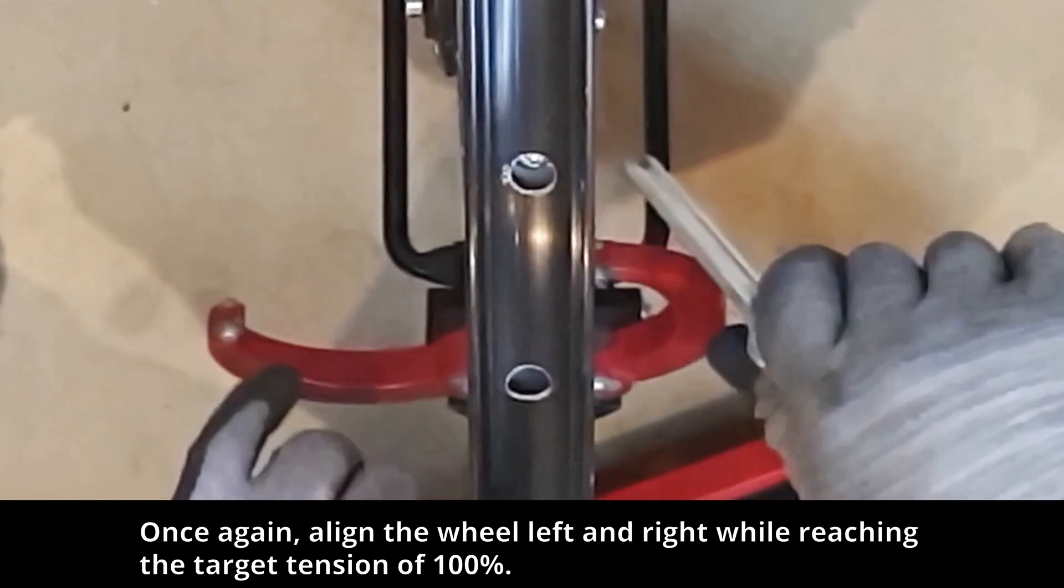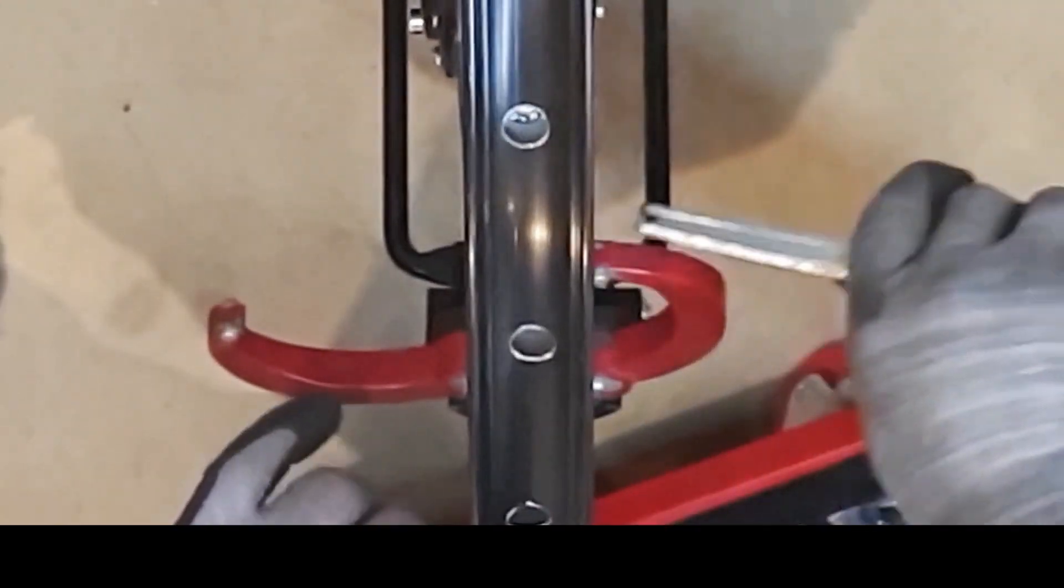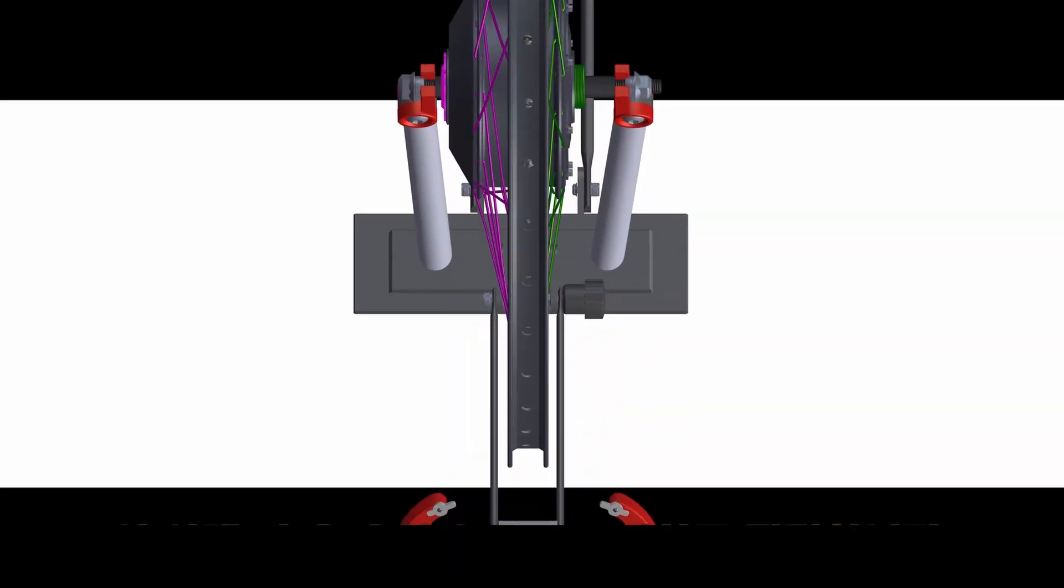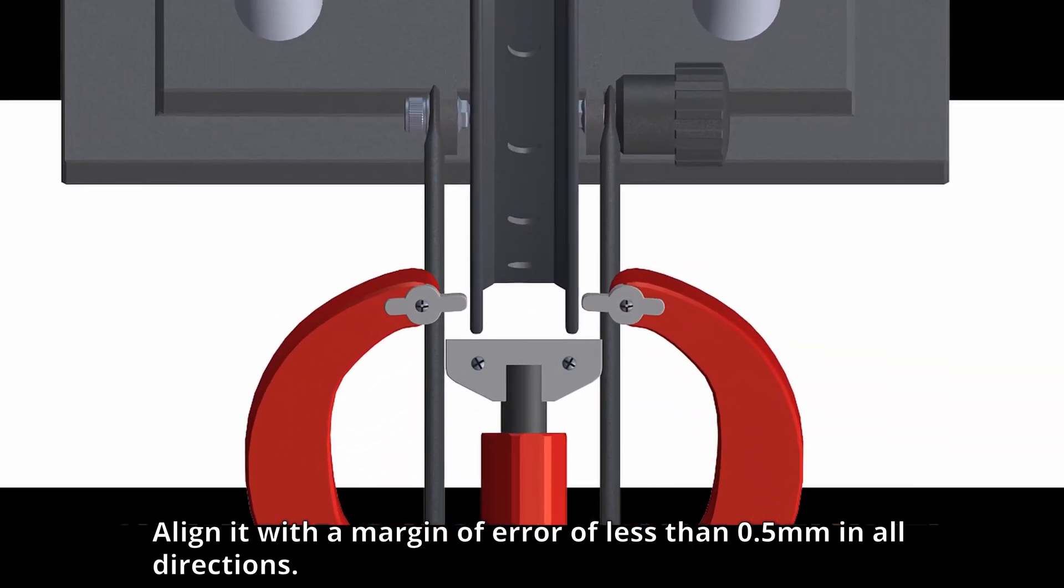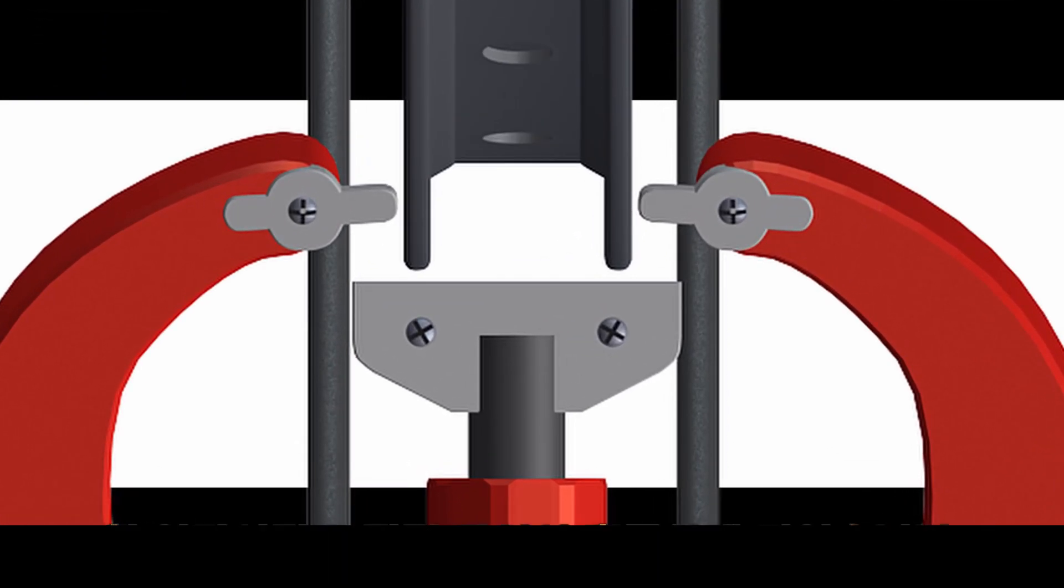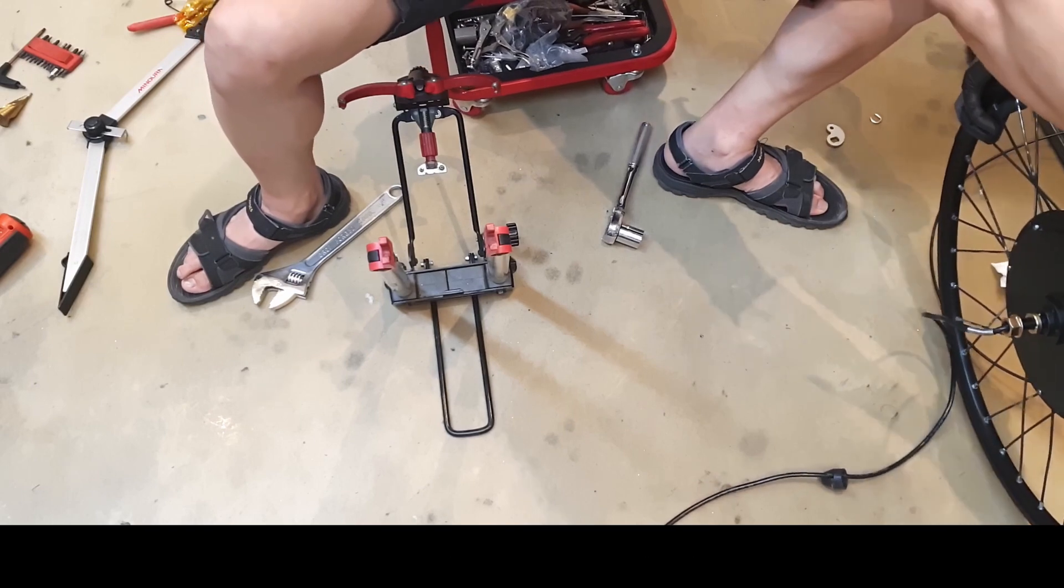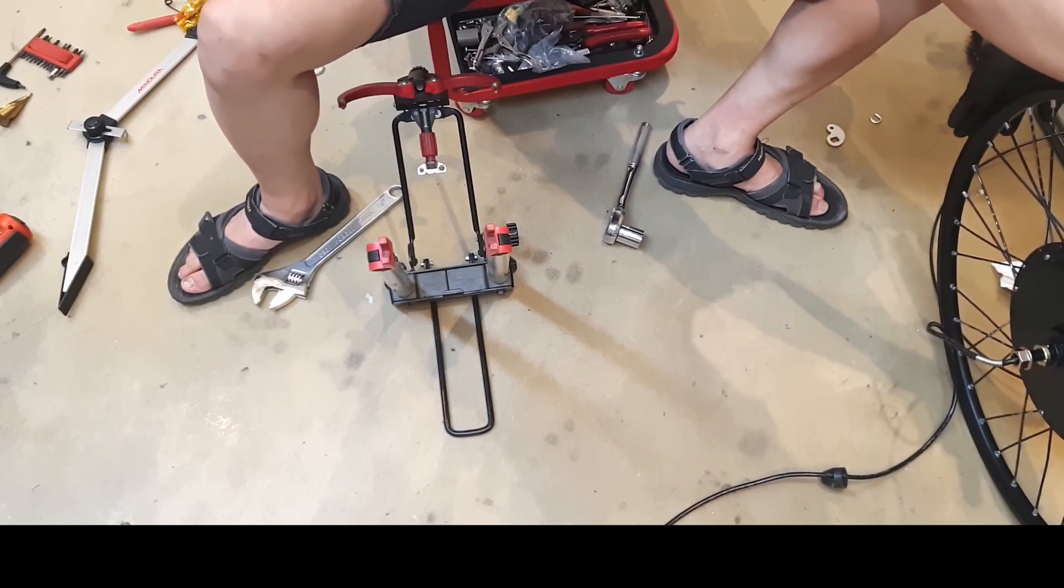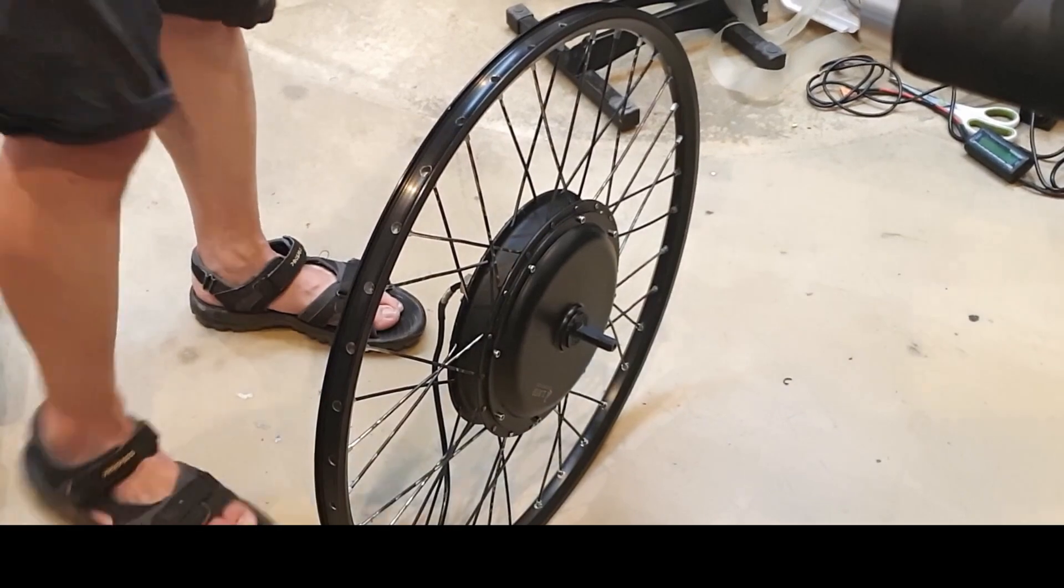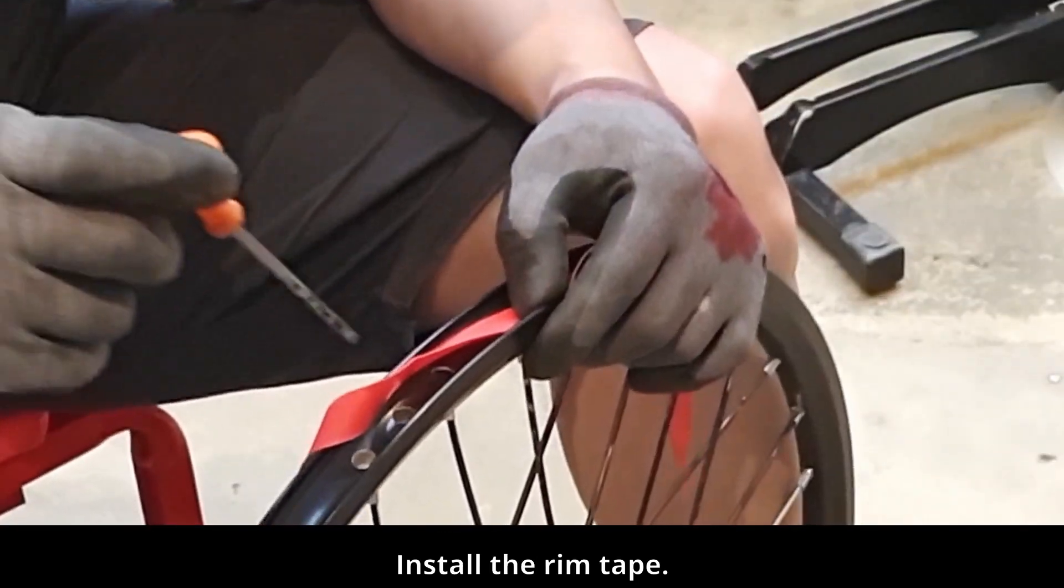Once again, align the wheel left and right while reaching the target tension of 100%. Align it with a margin of error of less than 0.5 millimeters in all directions. The wheel alignment job is now done excellently. Front wheel adjustment is completed.